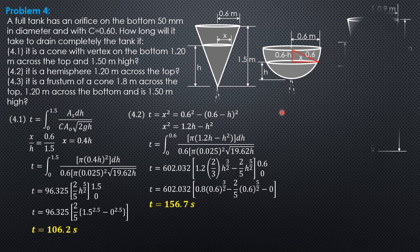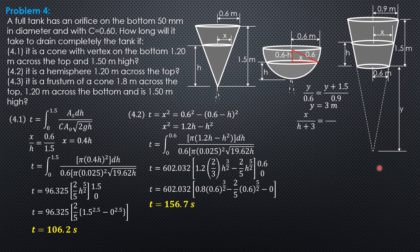Finally, for the frustum of a cone. First, solve for Y by similar triangles: Y/0.6 = (Y + 1.5)/0.9, which gives Y = 3 meters. Then express X, the radius of area S at any instant: X/(H + Y) = 0.6/3, so X = 0.2(H + 3). Since area S = π·X², squaring X gives 0.04 times (H² + 6H + 9).